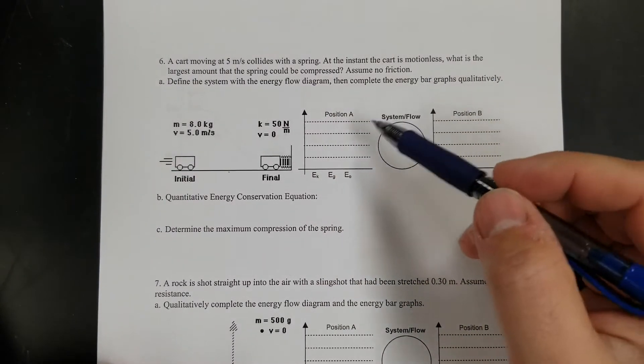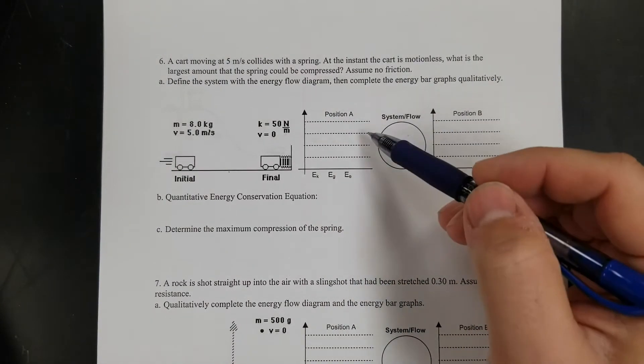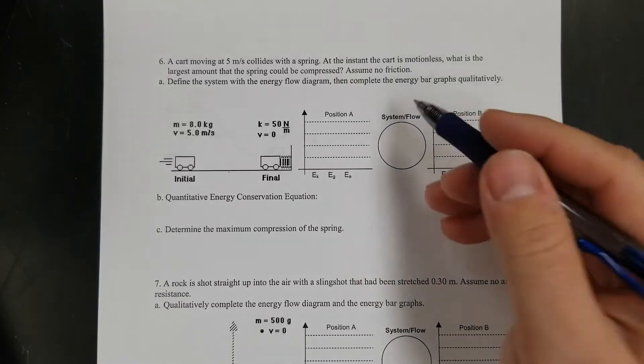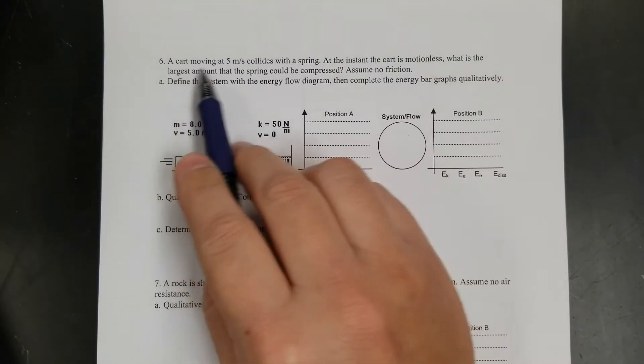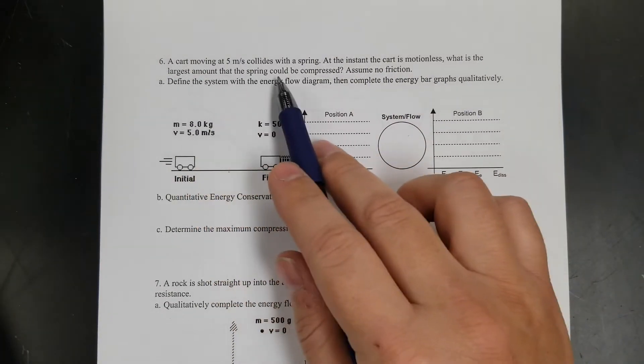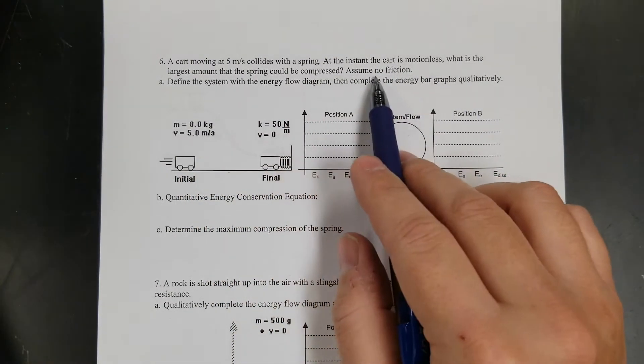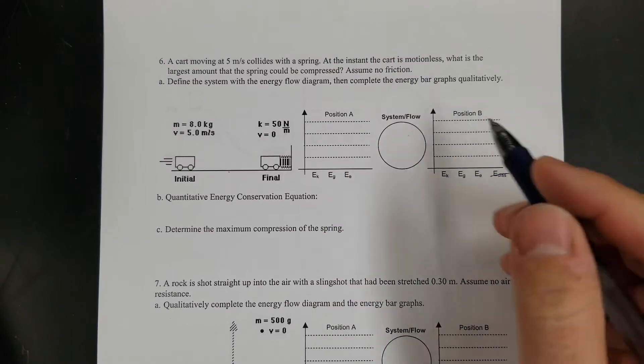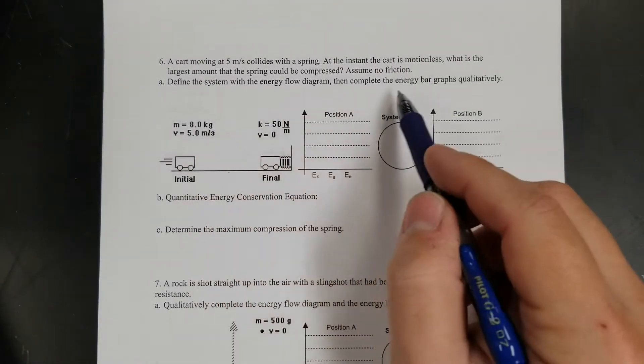So these problems, we're doing the same thing, drawing our diagram and our bar charts, except now we're actually going to solve. A cart moving 5 meters per second collides with a spring. The instant the cart is motionless, what's the largest amount the spring could be compressed? No friction, so no friction, no heat.